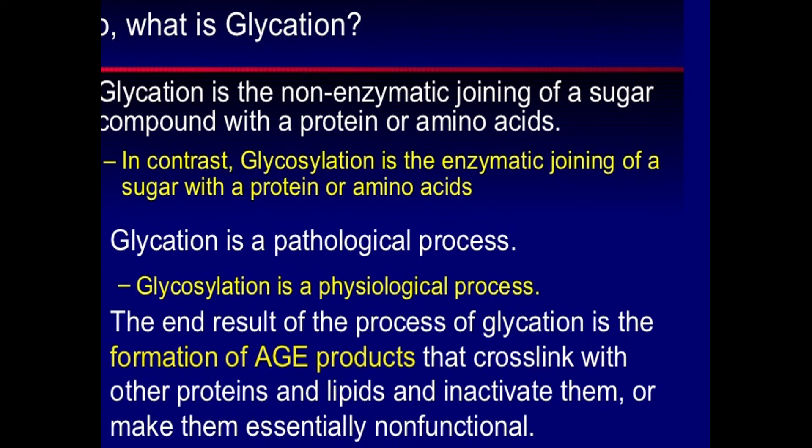In the diabetic patient, non-enzymatic glycation of proteins occurs. That non-enzymatic glycation is quite different compared to glycosylation. Glycosylation is an enzymatic joining of sugar with a protein or amino acid, while glycation is a non-enzymatic attachment of a sugar molecule — particularly glucose — to a protein or amino acid. This is non-enzymatic and pathological.